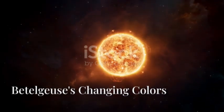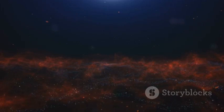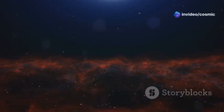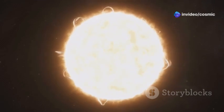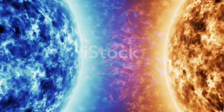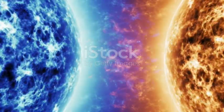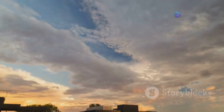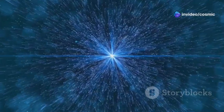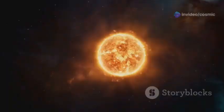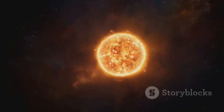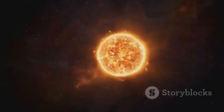A Telltale Hue, Betelgeuse's Changing Colors. Betelgeuse's reddish hue is a telltale sign of its advanced age and evolutionary stage in the cosmos. The color of a star is directly related to its surface temperature which varies greatly. Hotter stars emit more blue light while cooler stars emit more red light creating a spectrum. Throughout its life cycle, Betelgeuse has undergone a dramatic color change from blue to red. When it was a young star it was much hotter and bluer in color. As it aged and evolved its core temperature decreased, causing its surface temperature to drop as well, leading to a color shift.